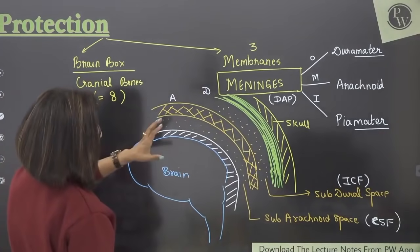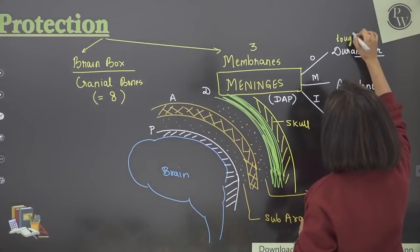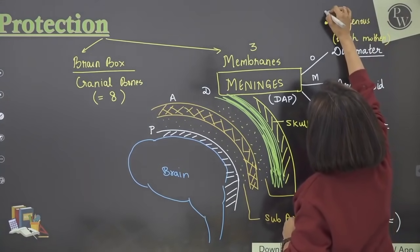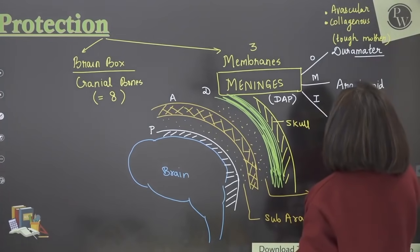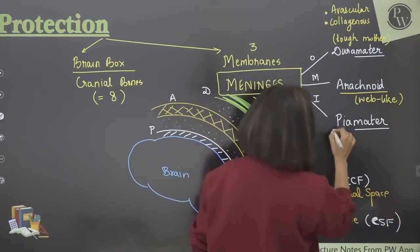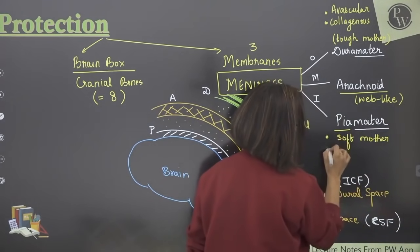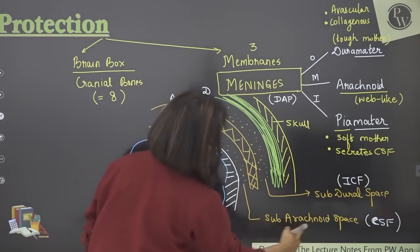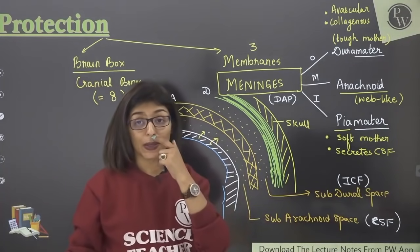Dura mater means 'tough mother' — it is made of collagen fibers, avascular, in contact with the skull. Arachnoid is web-like and spongy. Pia mater means 'soft mother' — in contact with the brain surface and it is also vascular. Pia mater also secretes CSF. So pia mater produces CSF in the sub-arachnoid space.